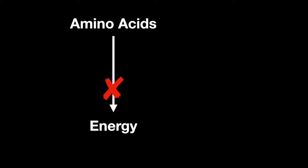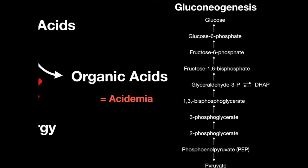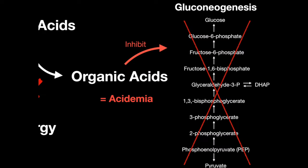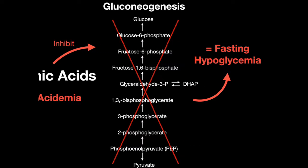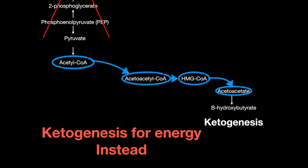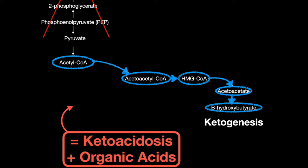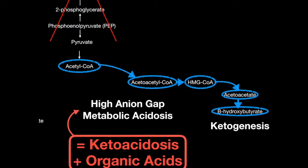Amino acids are not properly metabolized, causing a buildup of acids, resulting in acidemia. As the organic acids build up, gluconeogenesis will be inhibited. This will cause blood glucose levels during periods of fasting to be lower than normal. And to make up for it, ketones are produced, which ultimately cause ketoacidosis, resulting in a high anion-gap metabolic acidosis.